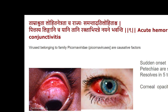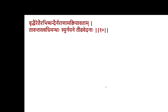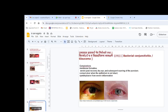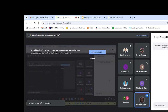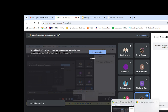One of the major complications of Abhishyanda is that it can produce Adhimantha as a later complication, as well as other Sarvagatharoga conditions. We will continue with Adhimantha in the next session. If there are any questions we will answer them and wind up today, and in the next session we will continue with Adhimantha and other Sarvagatharogas.